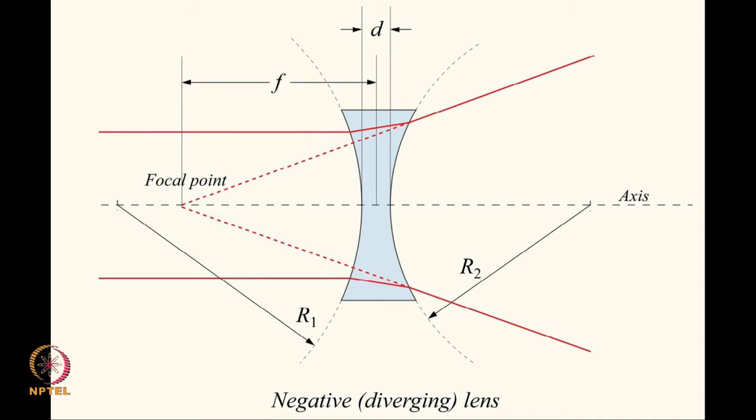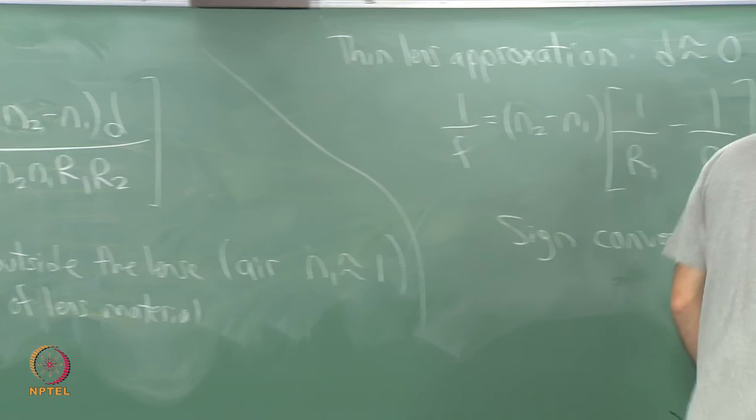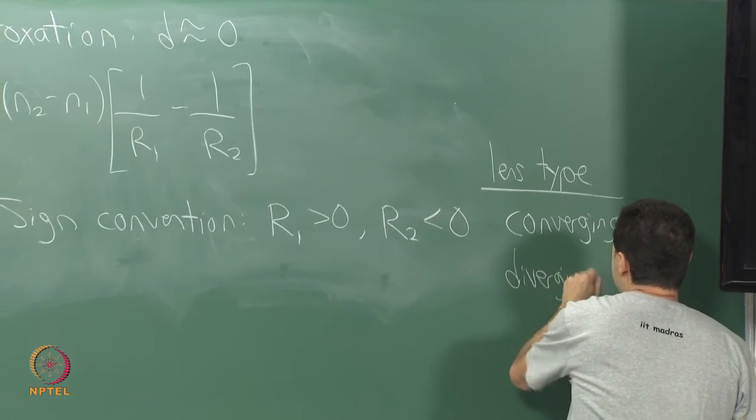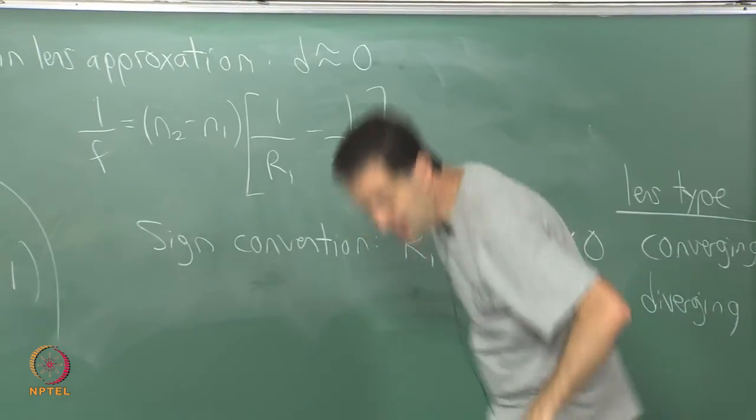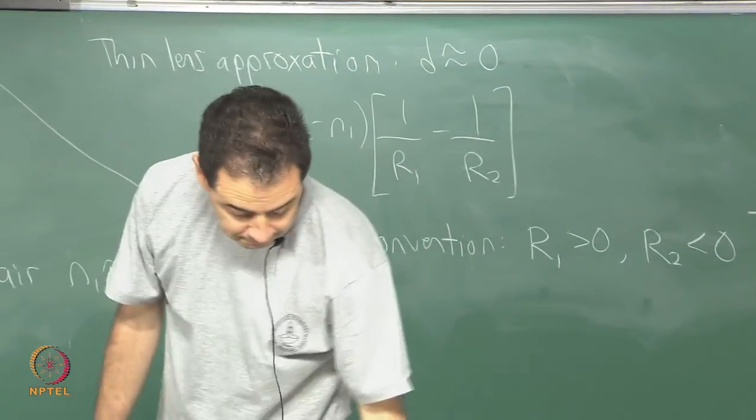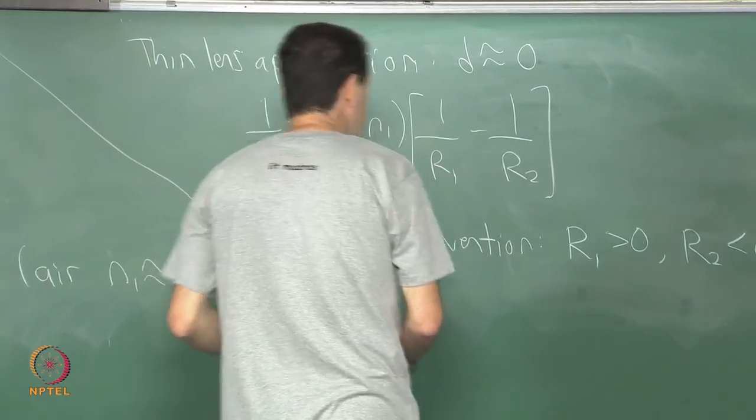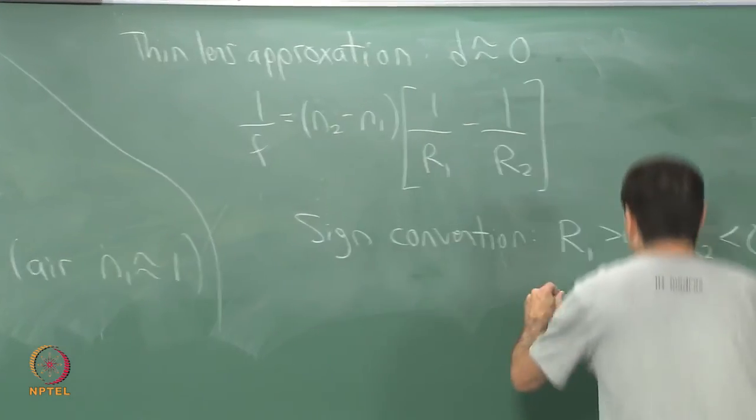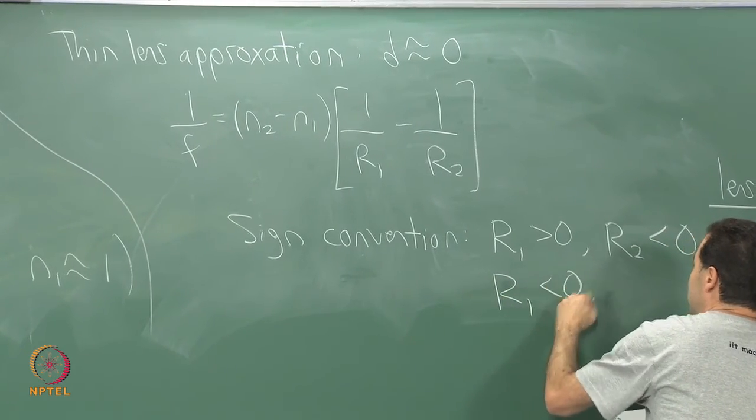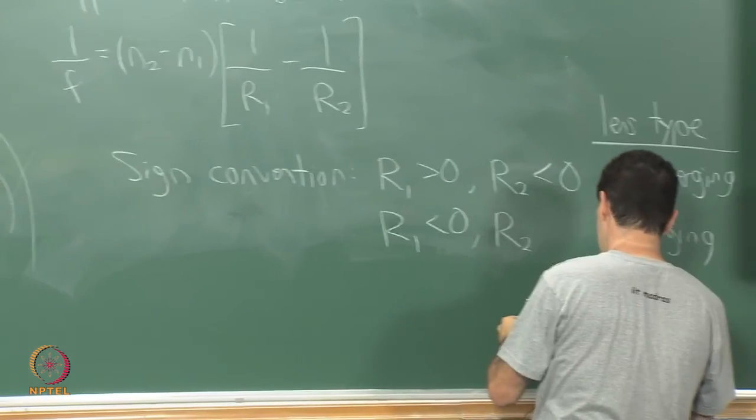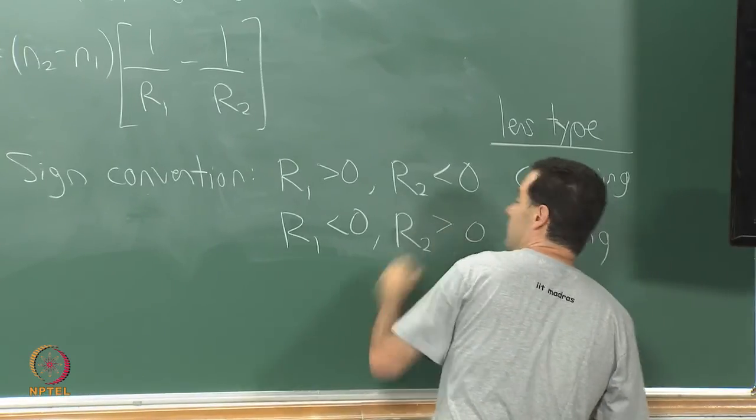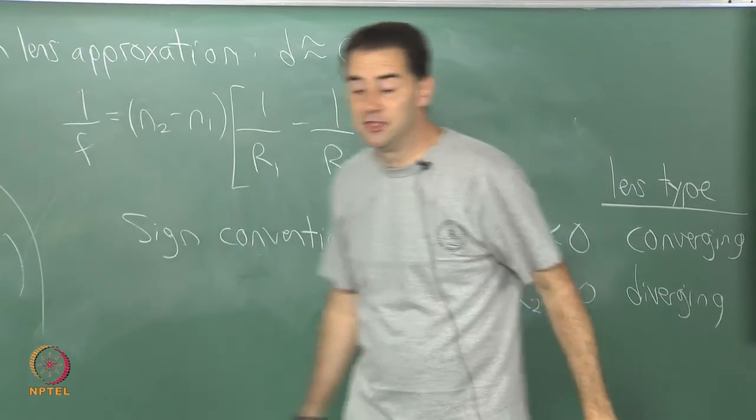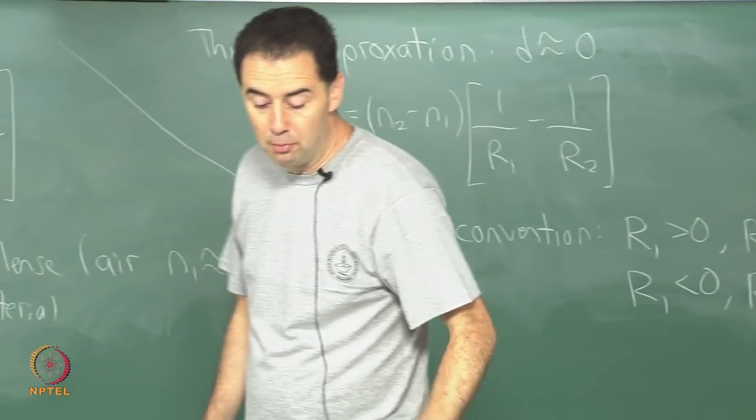There is also diverging lenses. If you've seen optics before, it should not be surprising. There's the diverging case where we can make rays of light, instead of converging, spread apart. I will just mention the sign convention in this case. R1 in this case is less than 0 and R2 is greater than 0. You can directly apply the lens makers equation in the original form and in the thin lens approximation to determine the focal point.